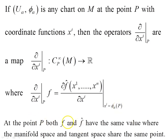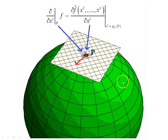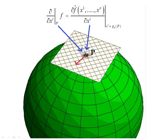At the point p, both f and f-hat have the same value where the manifold space and tangent space share the same point. There is our point p, the tangent space — the flat plane — and the surface of the sphere being our manifold, with some vector at the point p. We find that d/dx_i of f at the point p equals d(f-hat)/dx_i at the point x_i equals phi_alpha of p, and that is used in our argument to develop the tangent space in the previous video.